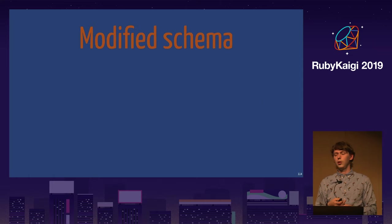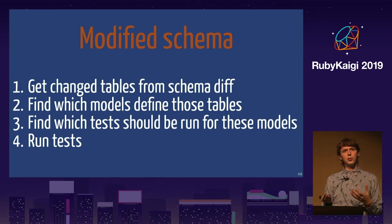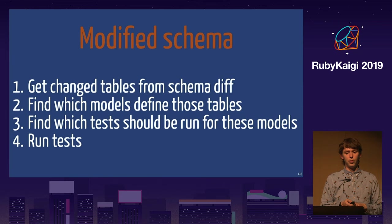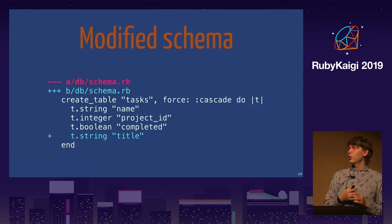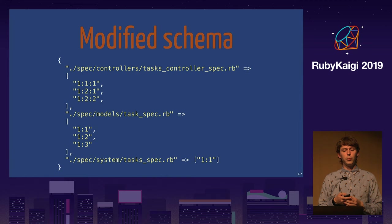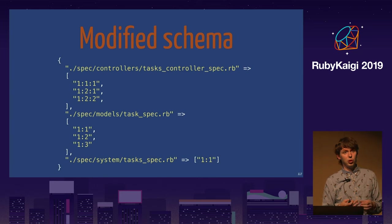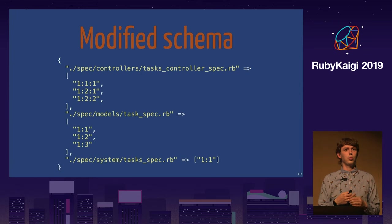The last predictor is Modified Schema. It is the one that uses the table map. It loads the database schema, searches what has been changed there, finds which models define the tables changed in the schema, and from those models knows which tests need to be run. So if we have a migration that changes a tasks table and adds a new column called title, the predictor will go through the table map and execution map and say we need to run the tasks controller specs, the specs for the model itself, and some system tests for tasks. It's very convenient when you're writing a lot of migrations and want to be sure you haven't broken tests accidentally.